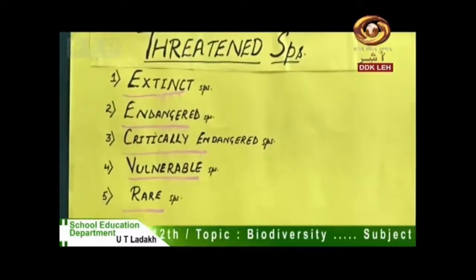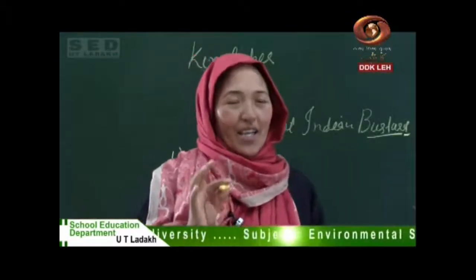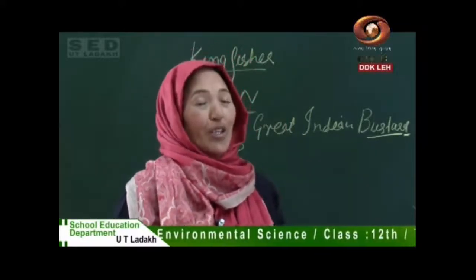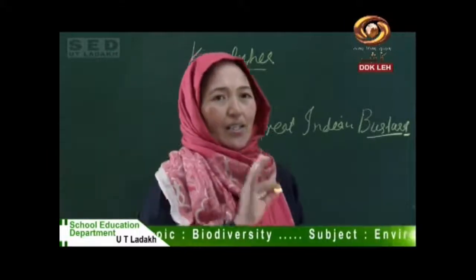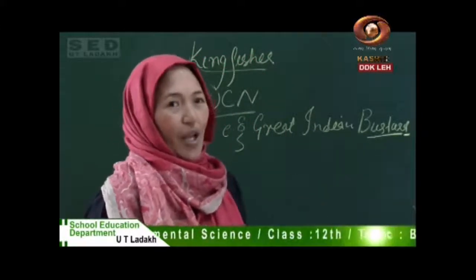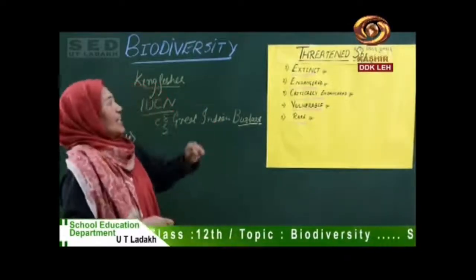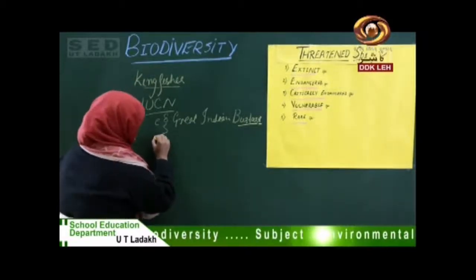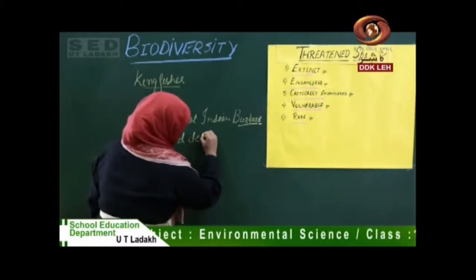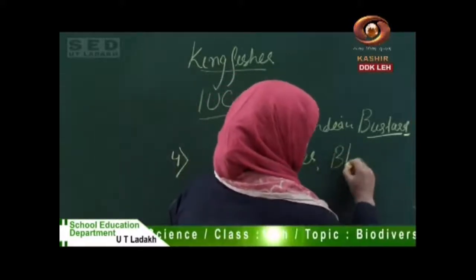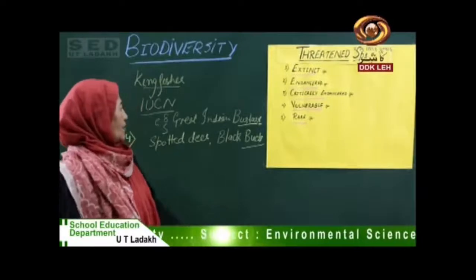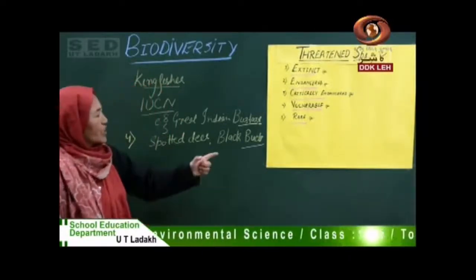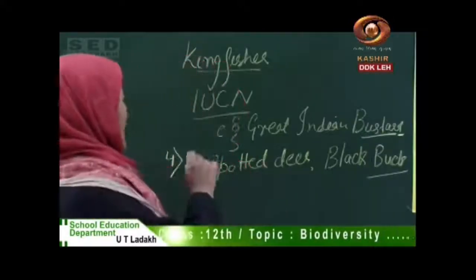The fourth category is Vulnerable. These are species whose population is declining due to over-exploitation of their habitat. Vulnerable species are not yet in the endangered category — they are still abundant — but if not conserved now, they will become endangered. Examples include the spotted deer and the blackbuck, found in national parks across India and in Rajasthan respectively.